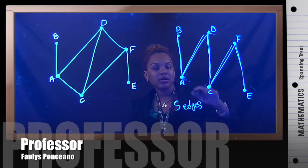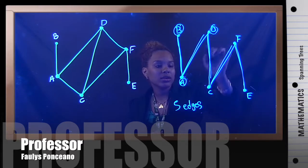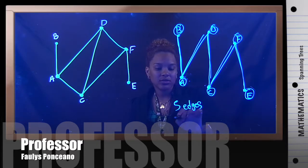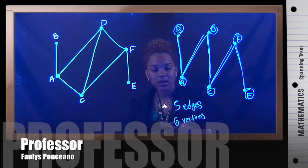And how many vertices do I have? I have one, two, three, four, five, six. So that means that I do have one less for the number of edges for this graph.